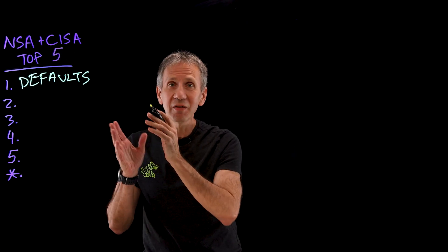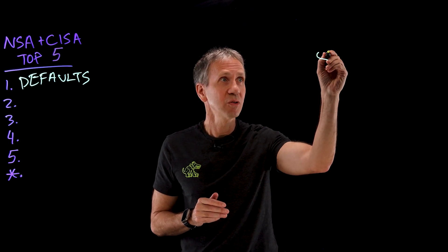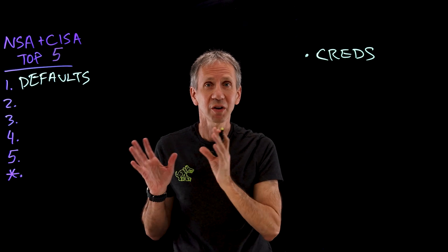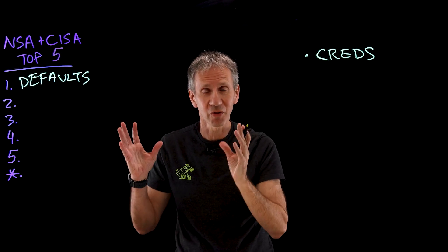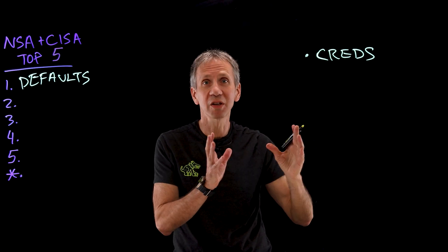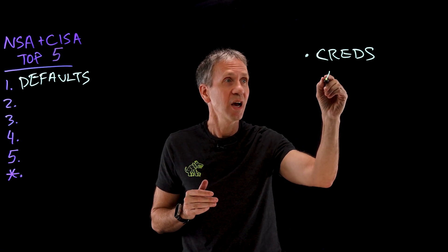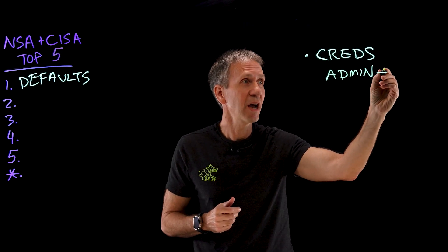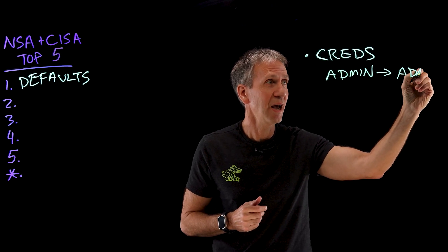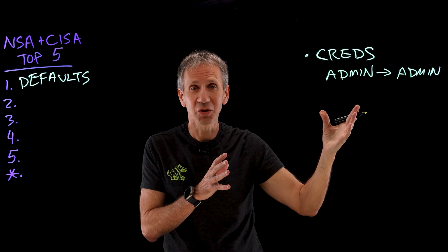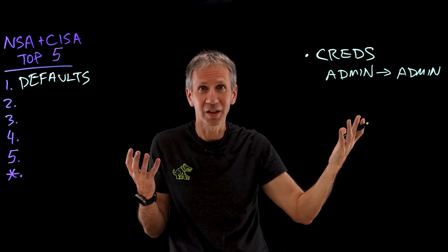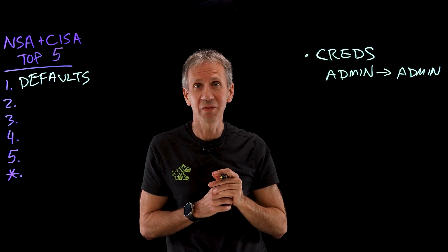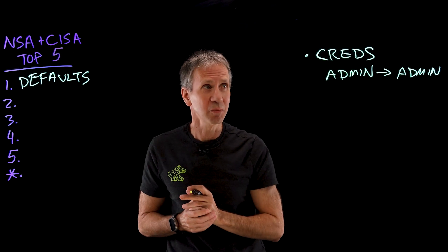The default configuration for a lot of systems will include credentials that can be easily discovered on the web. You could just do a search and find out that the default configuration for a particular operating system, middleware, or application has an administrator ID set up — let's say it's called admin — and the password for that ID is, guess what, admin. That's fine just for setting the thing up, but this is not what you want to put in production.